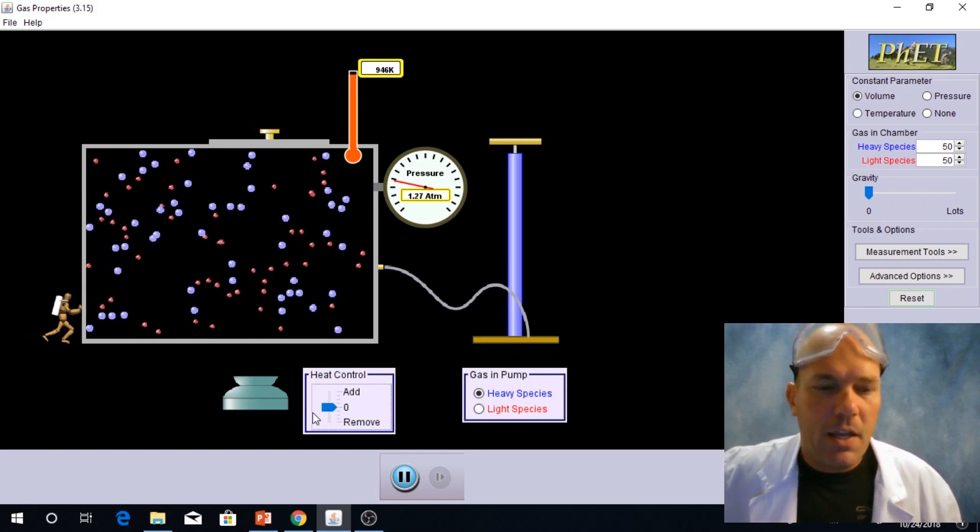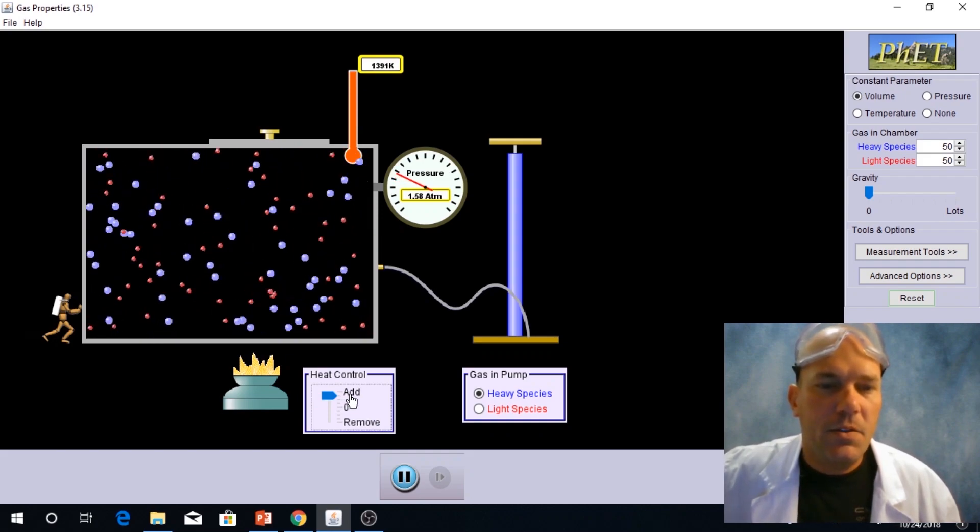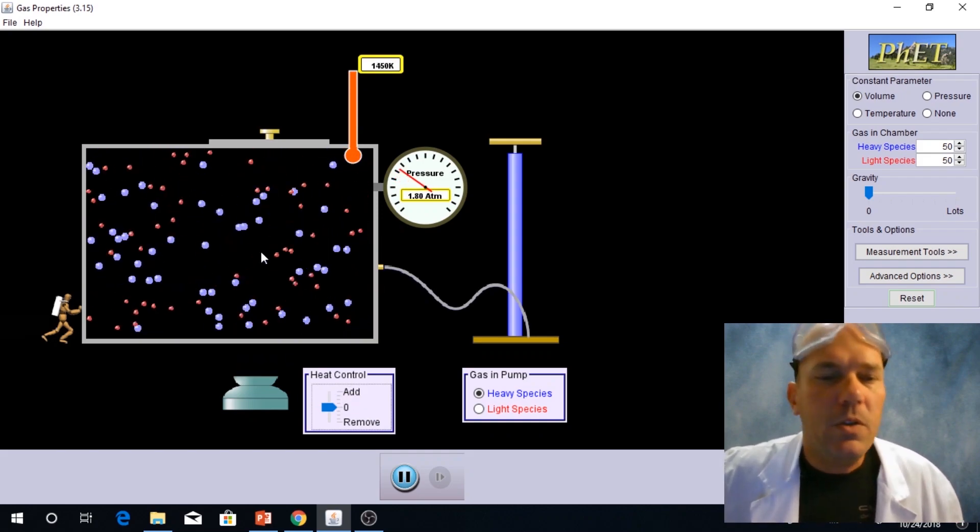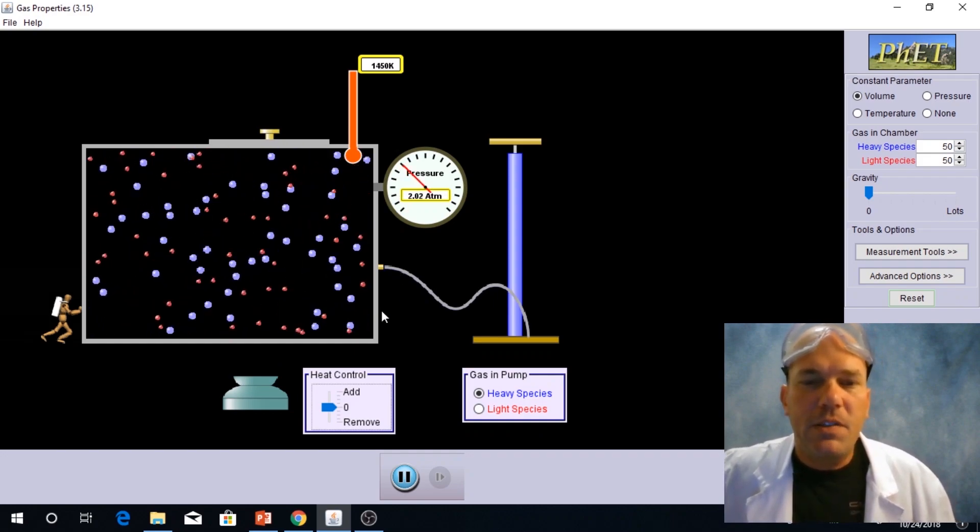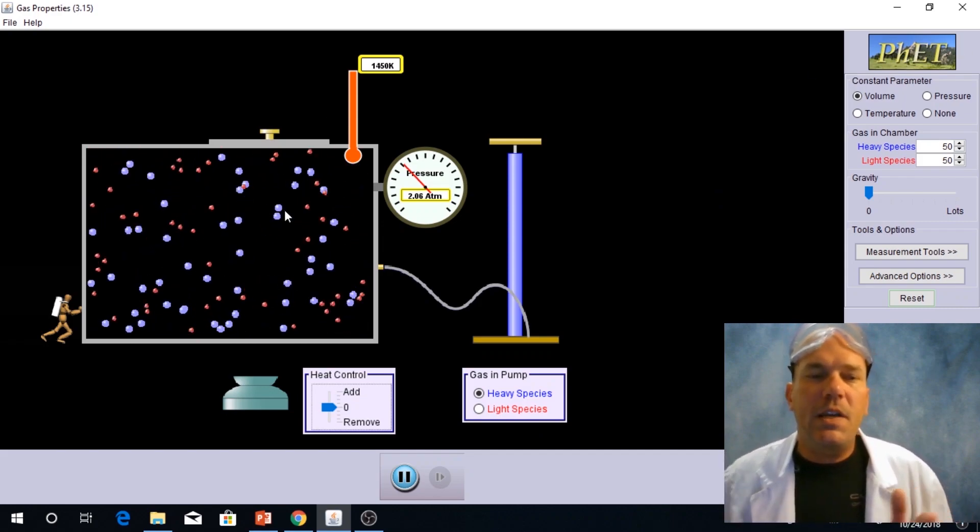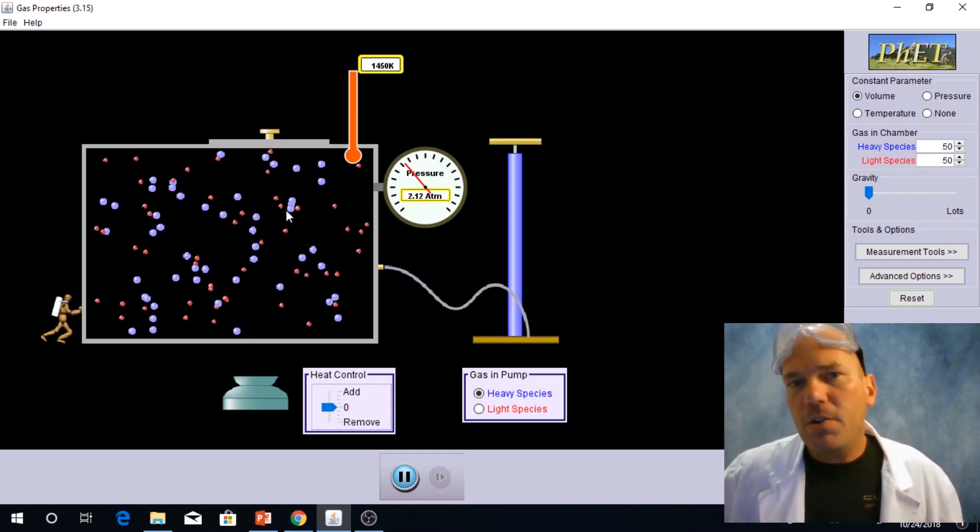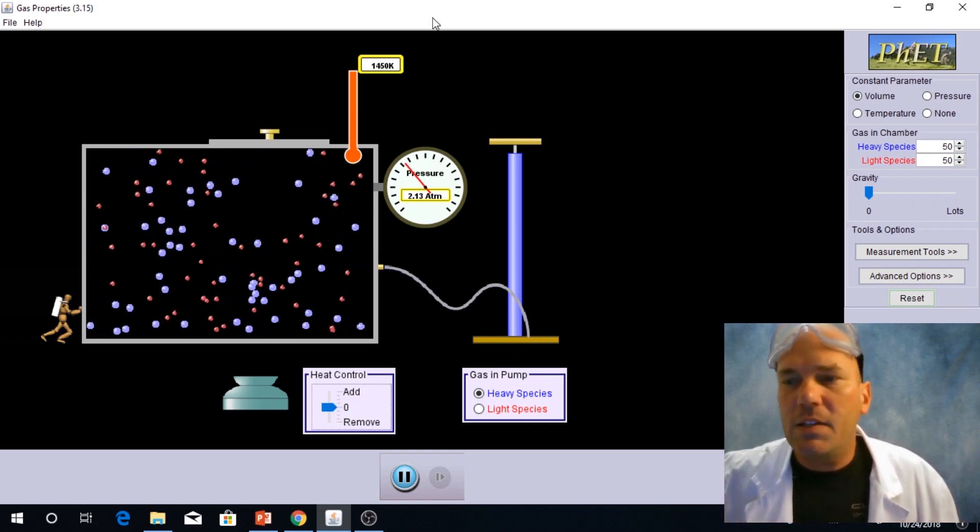I'm going to go ahead and add a little more heat here. Continue heating. We see these molecules are really moving fast now. We see temperature is over 200 atmospheres, and so we're seeing as temperature goes up, pressure goes up if volume is constant.